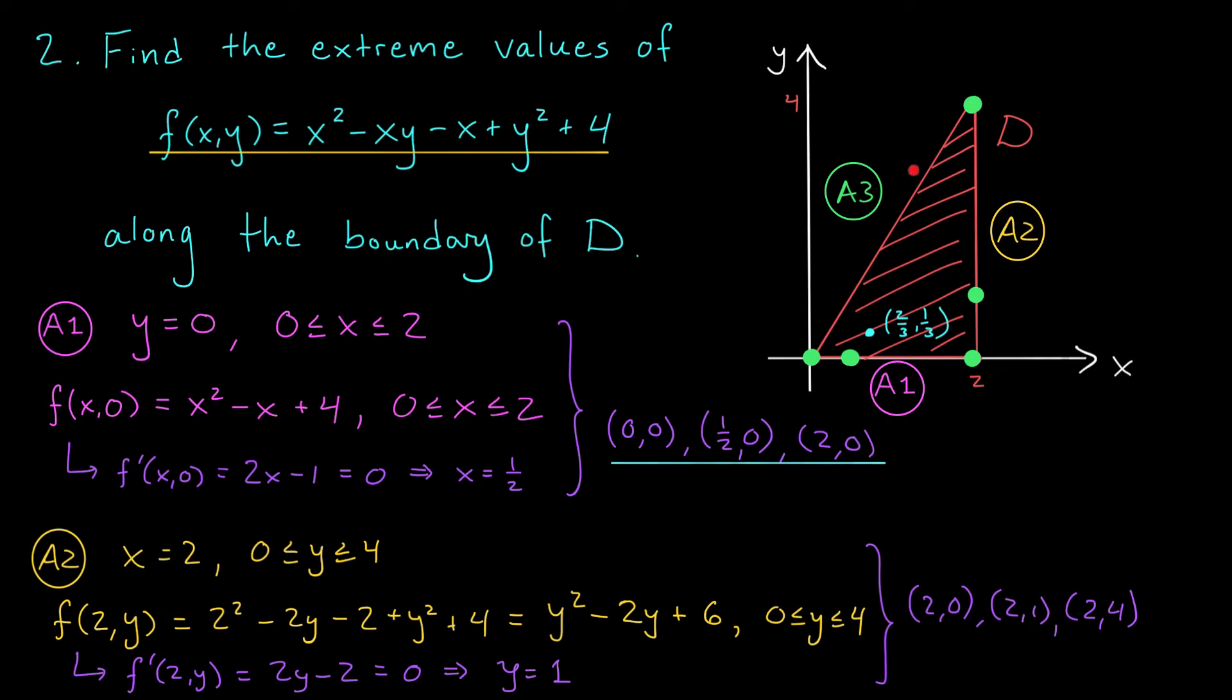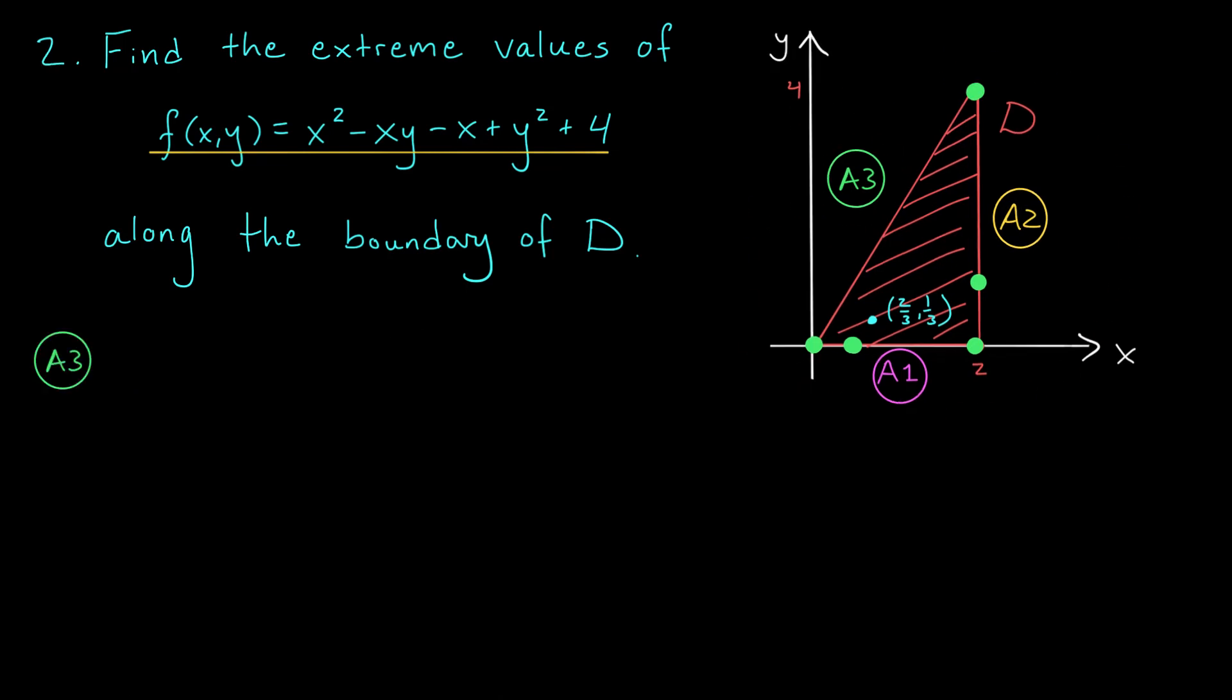Finally, we're going to analyze A3 on the next slide. Okay, let's see what's happening along A3 here. A3 is a line that passes through (0,0) and (2,4). So, it has a slope of 2 and a y-intercept of 0.